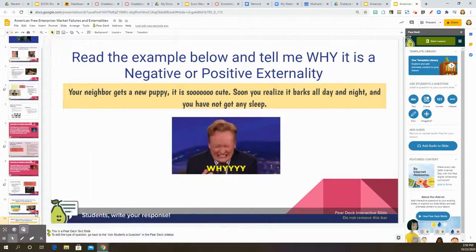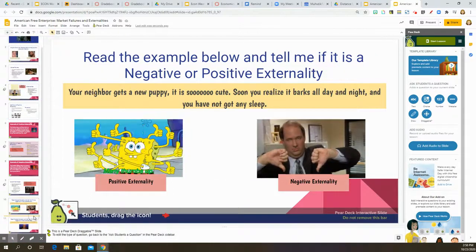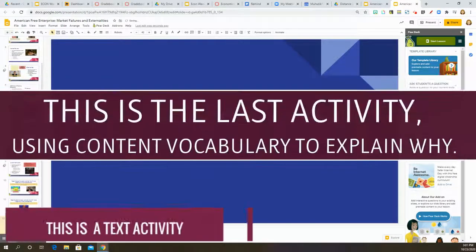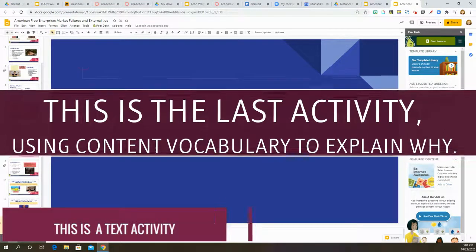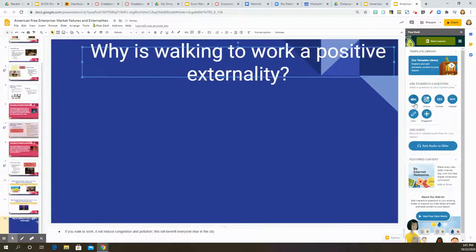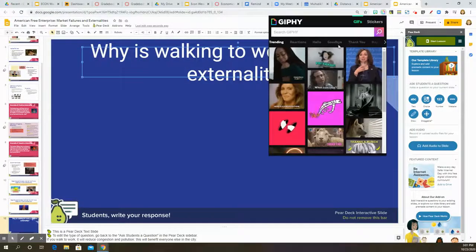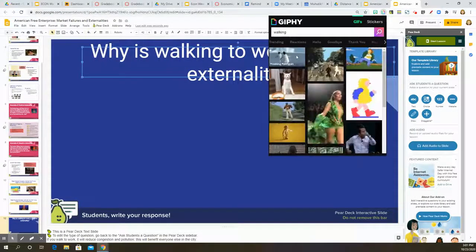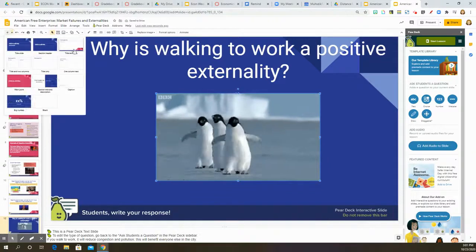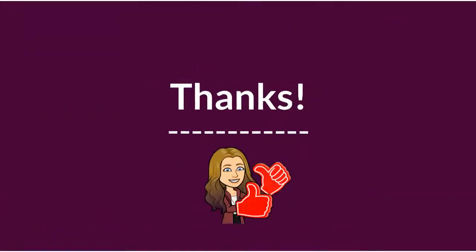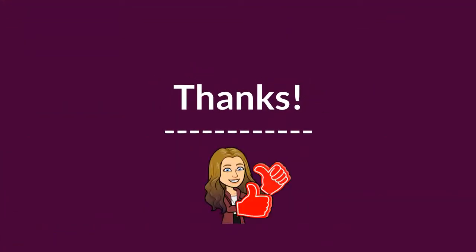The next slide will be their exit ticket, in which I'll be asking them to explain why walking to work is a positive externality. I doubt we get to this slide, but I'd rather have extra than not enough. At any point I could stop a Pear Deck, and if we have extra time I can also add a slide in the middle of a lesson. I can take it to the next DOK level by asking them to create their own example, which is nice. And that's it — super easy. Thanks for watching.